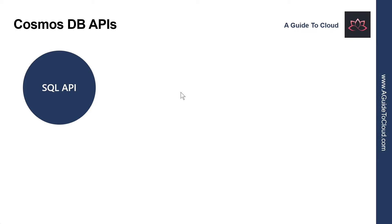All right. So before I talk about Cosmos DB APIs, let me give you an understanding about what is Azure Cosmos DB. Azure Cosmos DB is a NoSQL database management system. It's compatible with some existing NoSQL systems, including MongoDB and Cassandra.